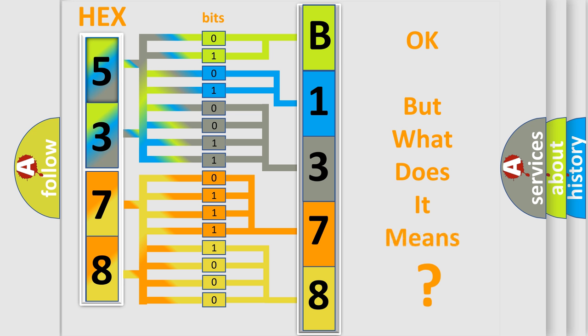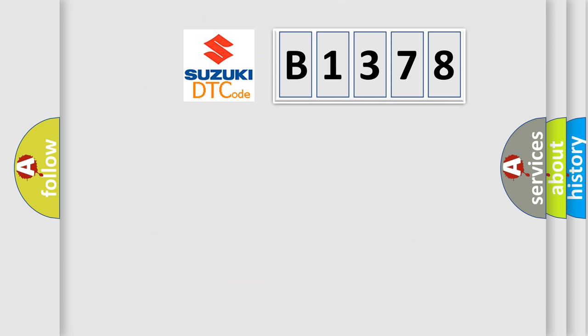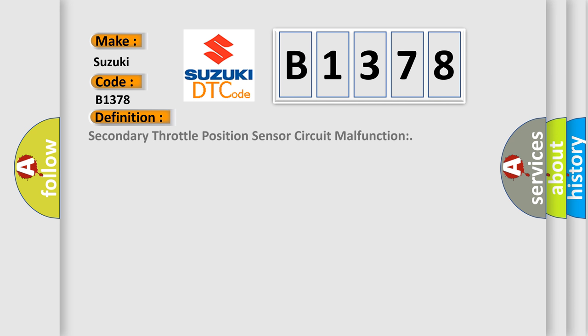The number itself does not make sense to us if we cannot assign information about what it actually expresses. So, what does the diagnostic trouble code B1378 interpret specifically for Suzuki car manufacturers? The basic definition is: secondary throttle position sensor circuit malfunction.